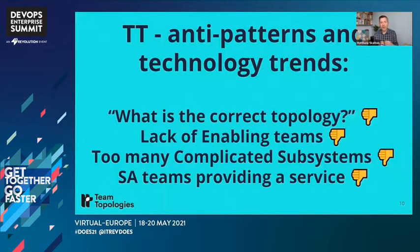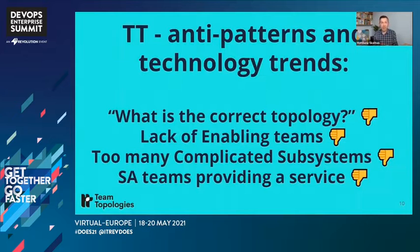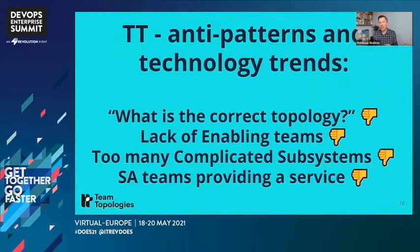Some anti-patterns we're seeing emerge: organizations looking for the correct topology for their organization — there isn't one single correct topology. Many organizations do not have enabling teams or don't have enough. Conversely, many organizations have too many complicated subsystems or component teams. And in some places we're seeing stream-aligned teams providing an internal service, which is an anti-pattern.